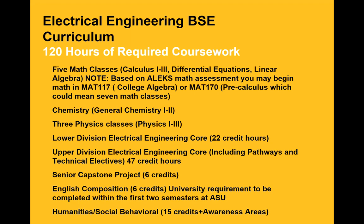There's one general chemistry class for engineers; however, if you've transferred general chemistry, you must have completed the equivalent of general chemistry one and two at your previous institution. Three physics classes, 22 credit hours of lower division specific electrical engineering core coursework, 47 credit hours of upper division specific electrical engineering core coursework, including a six-credit year-long capstone project. All students at ASU must complete first-year composition, English 101 and 102, and 15 credits including three credits of upper division humanities and social behavioral general studies.